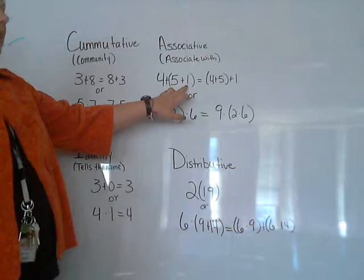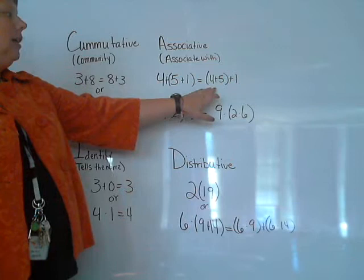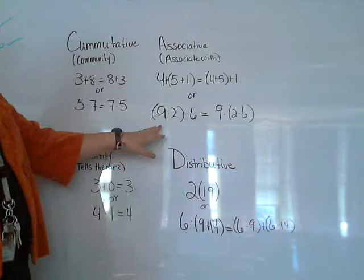So in this first one, 5 is associating with 1 in this set of parentheses. In this case, 5 is associating with 4 in these parentheses. They both equal the exact same thing.